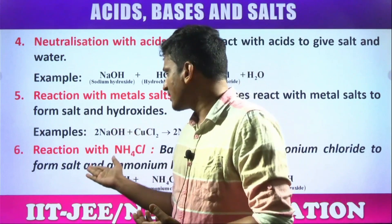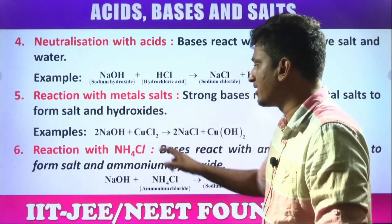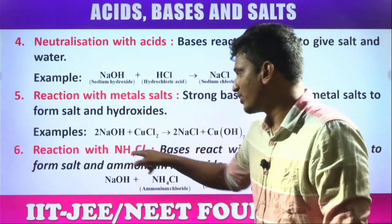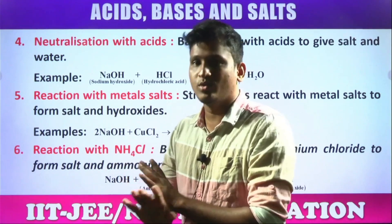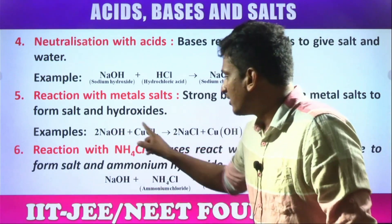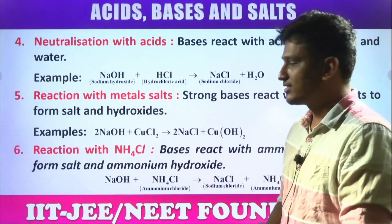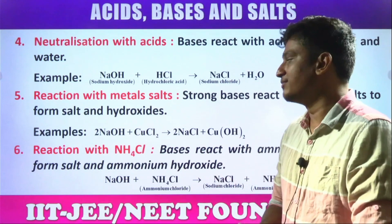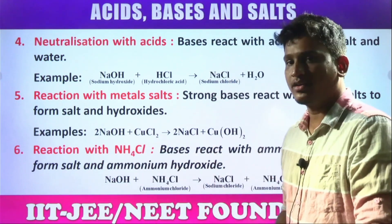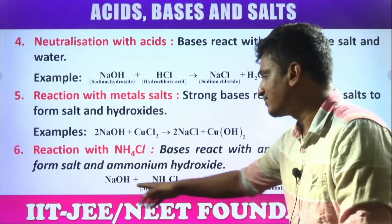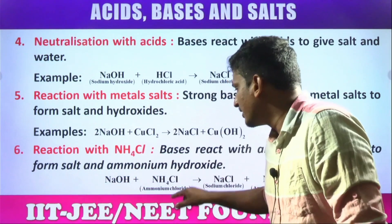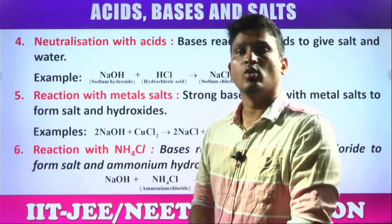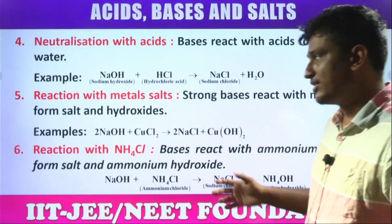Reaction with metallic salts: when bases react with metallic salts, they undergo a double displacement reaction — an exchange of ions takes place from both compounds. For example, sodium hydroxide reacts with copper chloride: sodium displaces the copper and reacts with chlorine to form sodium chloride, while the copper reacts with the hydroxide to form copper hydroxide. Similarly, sodium hydroxide reacts with ammonium chloride via double displacement, forming sodium chloride and ammonium hydroxide.